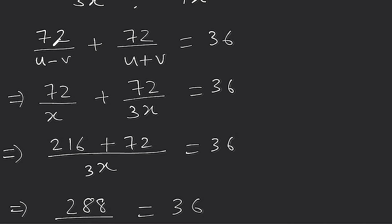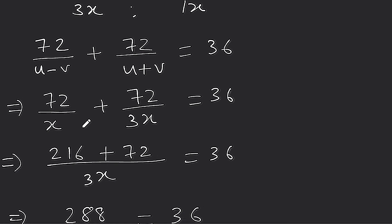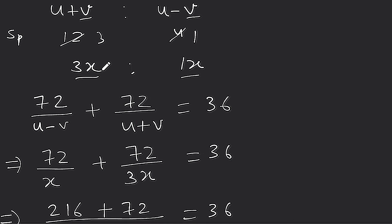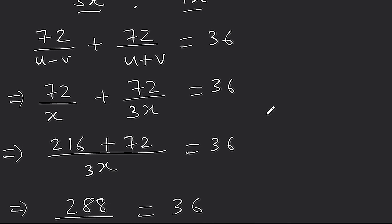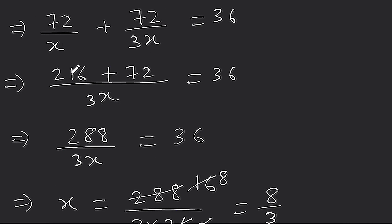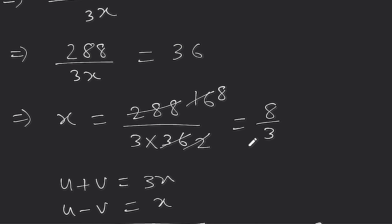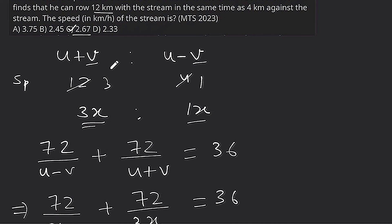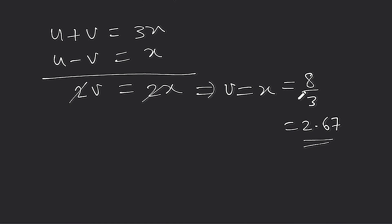u+b = 3x और u-b = x। 72 km upstream जाना है तो u-b = x speed से, और 72 km downstream u+b = 3x speed से। LCM लेकर 3x नीचे आया, 216 + 72 = 288, simplify करने पर x = 8/3 आया। b निकालने के लिए: (u+b) - (u-b) = 2b, यानी 3x - x = 2x, 2x/2 = x = 8/3 ≈ 2.67।